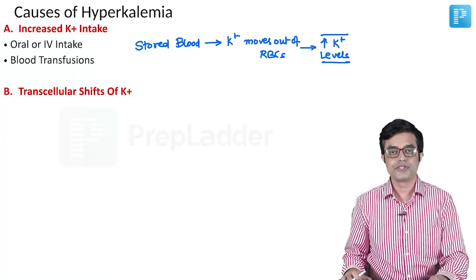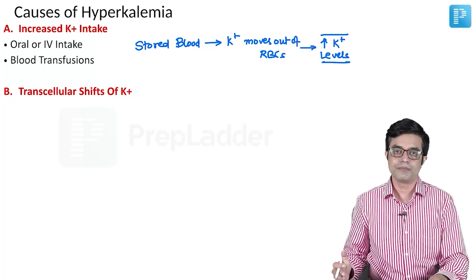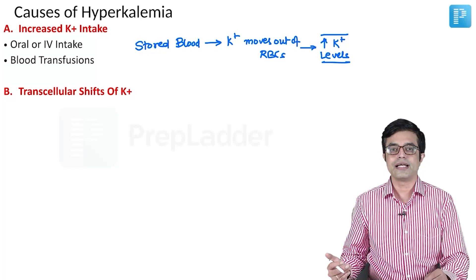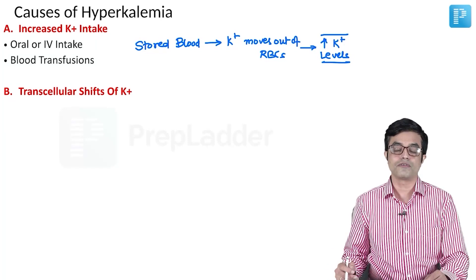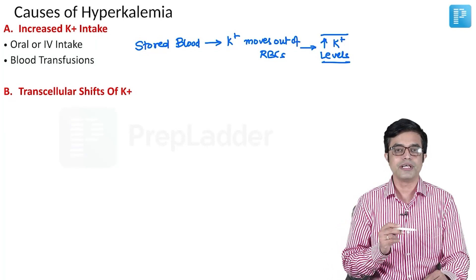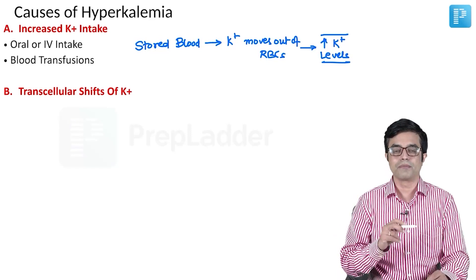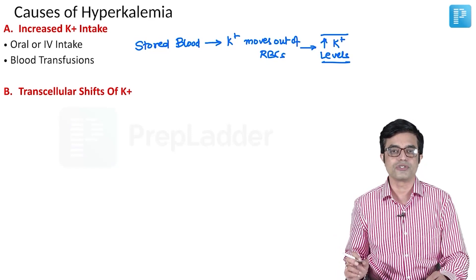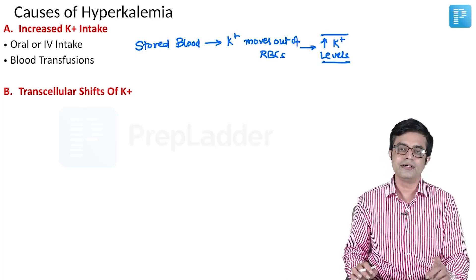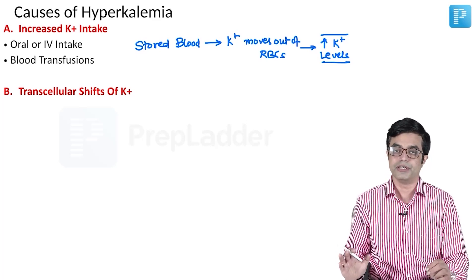The second category is transcellular shifts of potassium. Potassium is an intracellular ion, and in certain situations — certain acid-base imbalances as well as use of certain drugs — this potassium inside the cell can move out into the blood. This extracellular potassium will cause manifestations of hyperkalemia. This is the second mechanism of hyperkalemia, even if the total body potassium may remain normal.